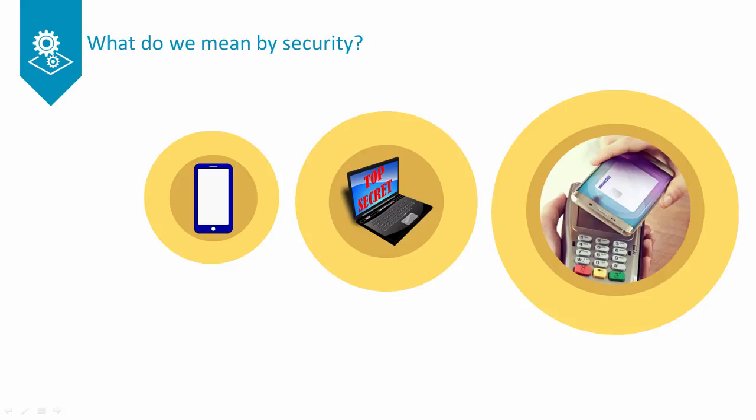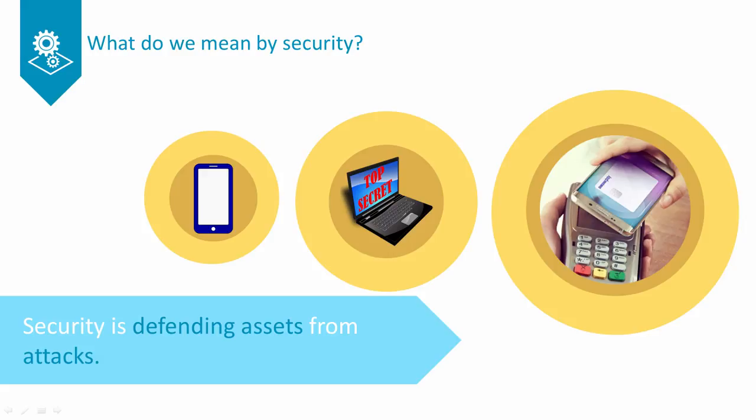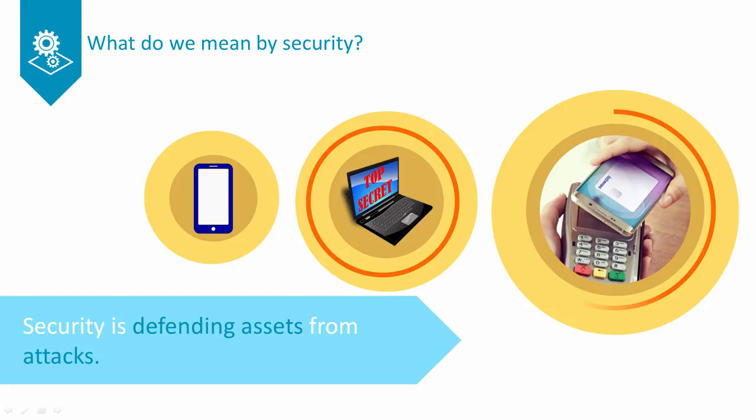The first thing we'll do is define what we mean when we talk about security in computer systems. Security is all about defending certain elements of a system — we'll call these elements assets — from attack. For example, a system may have assets which have value to us or other people. These assets could be secrets like personal information, or functions like payment authorisation. Our task is to defend these assets from attack.